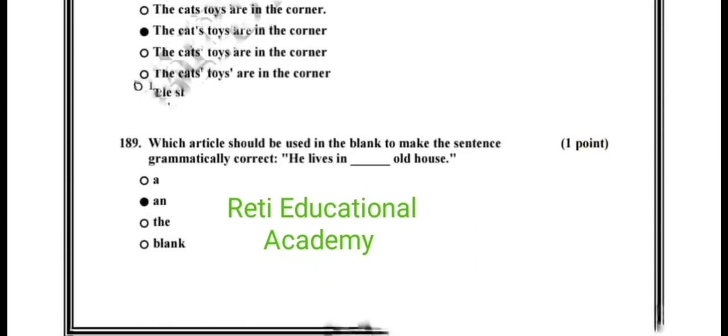Question number 189. Which article should be used in the blank to make the sentence grammatically correct? He lives in dash old house. And the correct option is he lives in an old house.